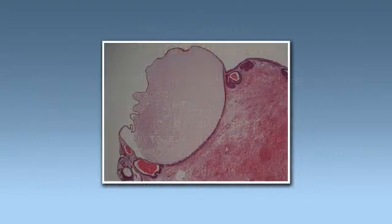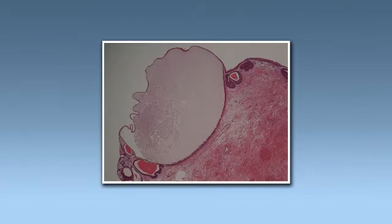In our recently reported series, due to antibiotic-recalcitrant recurrent urinary tract infection episodes and despite repeated fulguration procedures, a few patients were forced to undergo robotic cystectomy with urinary diversion to control the course of these infections, including urosepsis episodes.